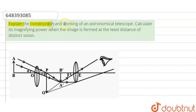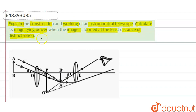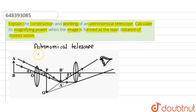Hello friends. Here the question is: explain the construction and working of an astronomical telescope and calculate its magnifying power when the image is formed at the least distance of distinct vision. Firstly, we have to explain the construction and working of an astronomical telescope. An astronomical telescope is a telescope which is used to observe astronomical objects — objects which are present outside the earth, meaning in space.